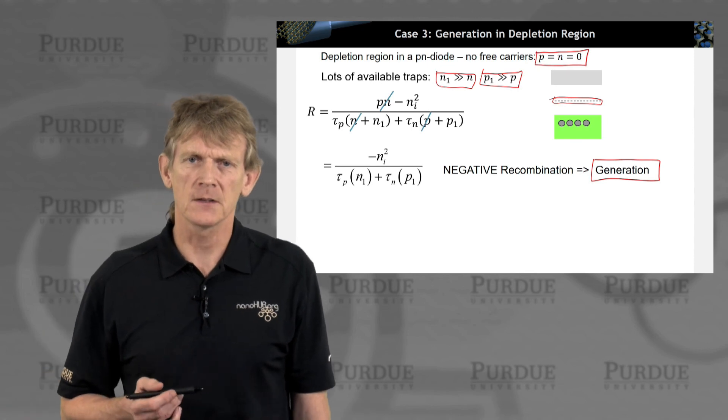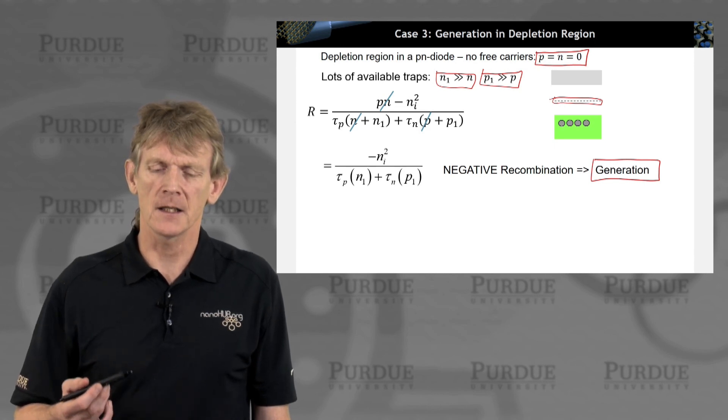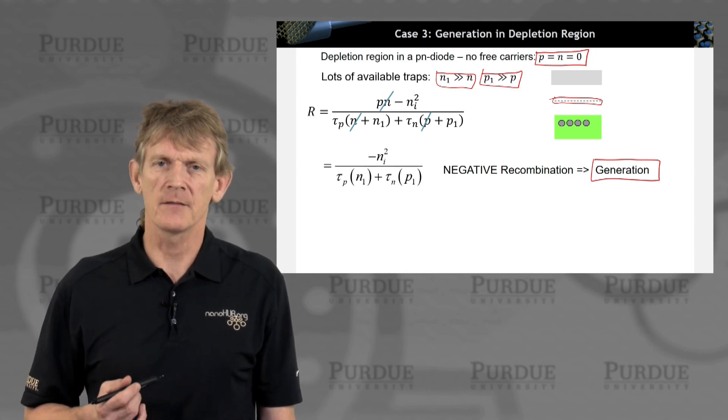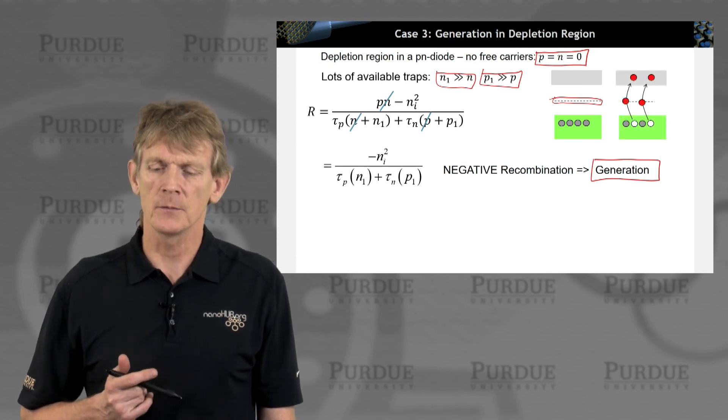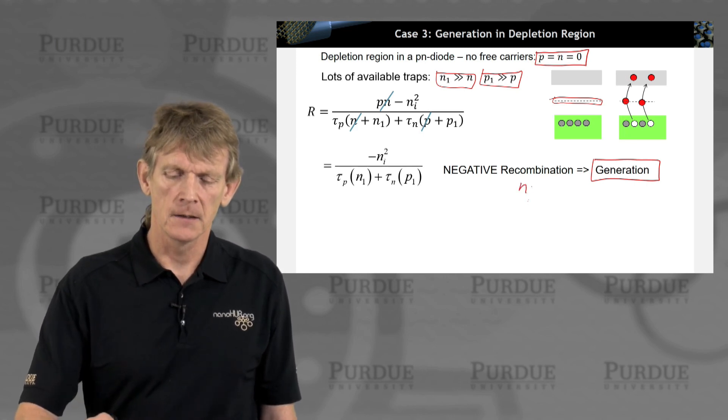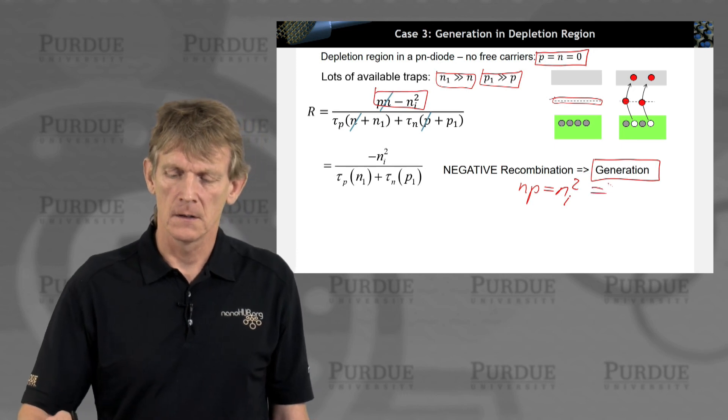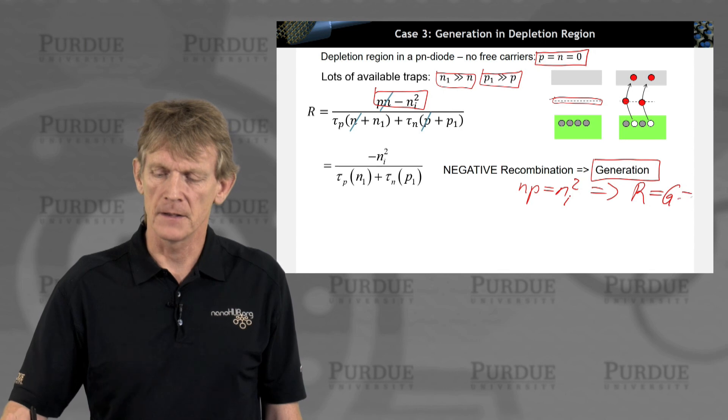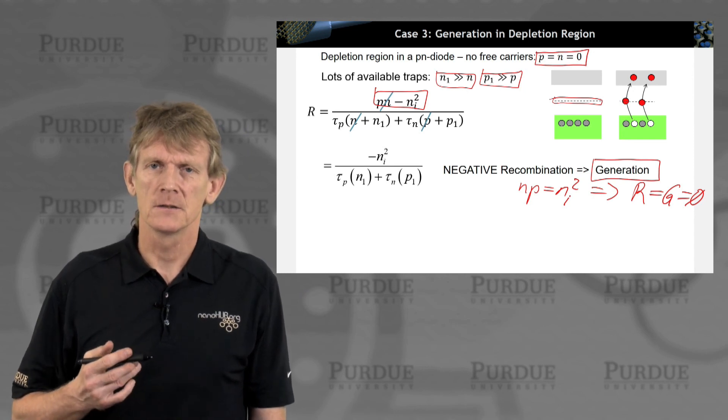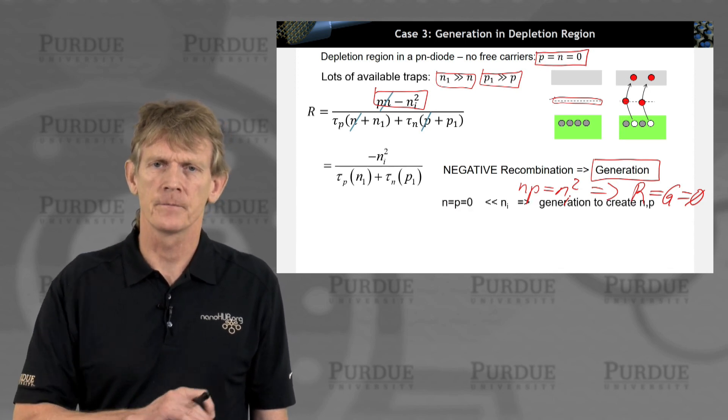So what happens in the system here is that the system tries to drive itself back to equilibrium. If there aren't any electrons and holes, and there should be some, the system will use traps to drive, or to create electrons and holes in this form, such that you have an equilibrium established. Once you establish equilibrium, then NP equals NI squared, which means this term is 0. That means R and G, the net R and G go to 0. So this trap assisted recombination, trap assisted generation, reestablish equilibrium, once you drove the system out of equilibrium.